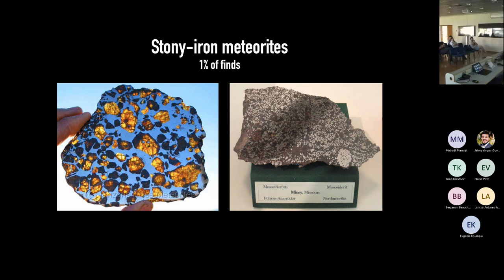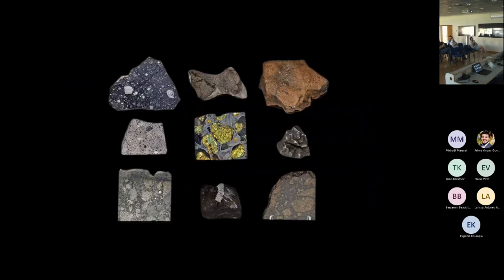The last type are stony-iron meteorites — absolutely beautiful and quite rare. The one on the left is a pallasite; if you ever find one, you're very lucky. They are valuable both scientifically and monetarily — probably a few thousand to tens of thousands of dollars. They consist of large silicate crystals, probably olivine, embedded in an iron-nickel alloy. On the right is a mesosiderite. We have this amazing diversity of compositions and textures.